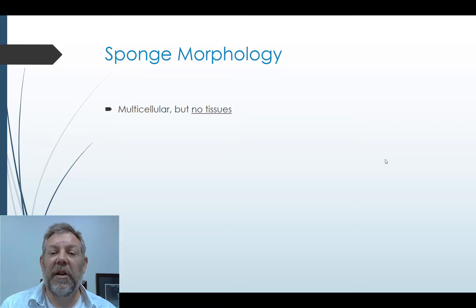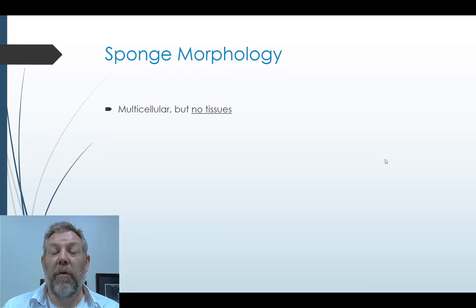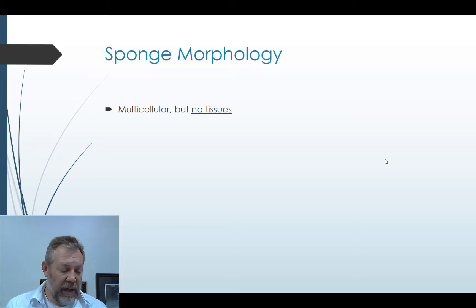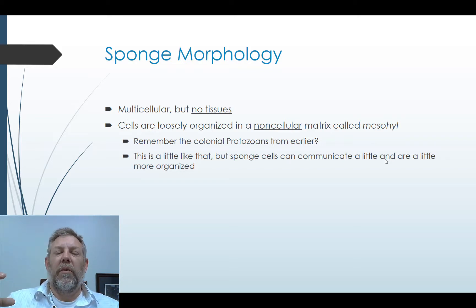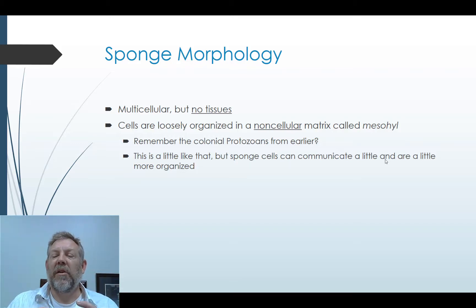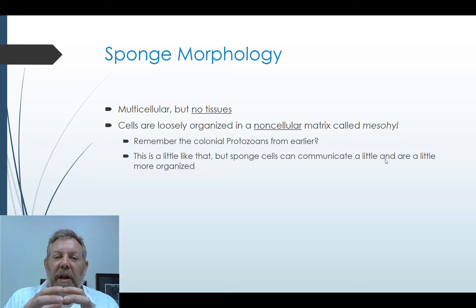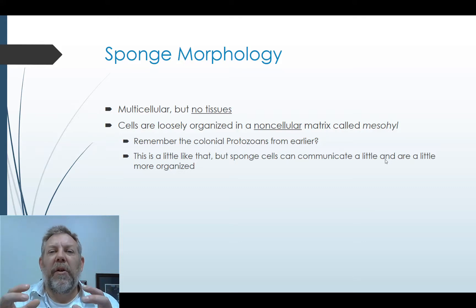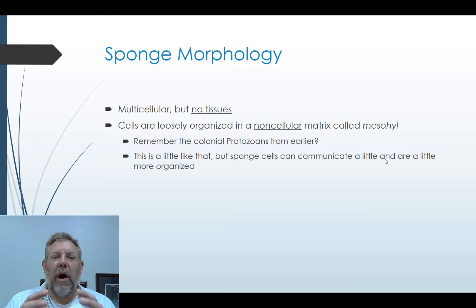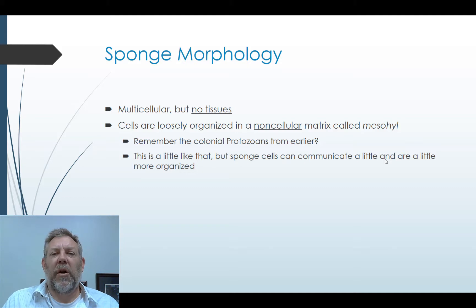Remember that these are multicellular organisms, but they don't form tissues. That's one of the things that separates sponges from all other animals — they don't form germ layers during development, and consequently they don't form any tissues. What they have is an organization of cells held in a noncellular matrix called mesohyl. You can see why we think these are older organisms: they don't have tissues or cells organized into a particular tissue type, but their cells are not independent — they all work together as a single organism.